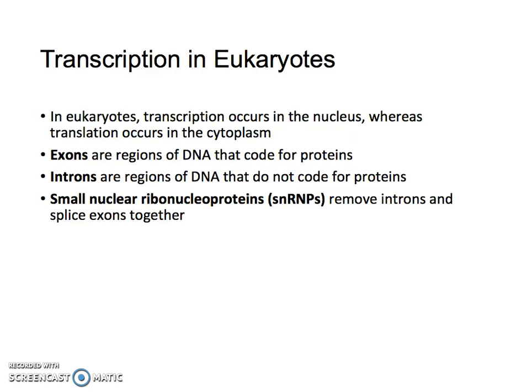We as eukaryotes have exons, which are regions of DNA that code for proteins, whereas we also have introns, which are regions that do not code for proteins. We have these things called small nuclear ribonucleoproteins, or SNRPs. SNRPs remove the introns and splice together the exons.